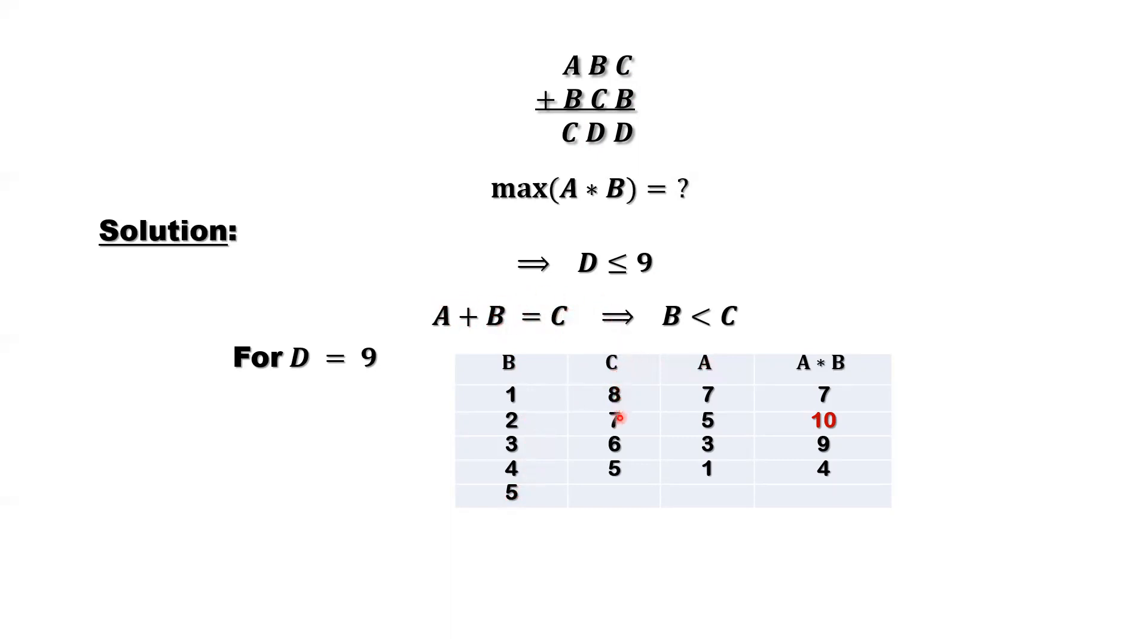C, this column minus this column equals this column. So that's 8 minus 1 is 7, 7 minus 2 is 5, 6 minus 3 is 3, 5 minus 4 is 1. So we think out A column based on this formula, A equals C minus B.